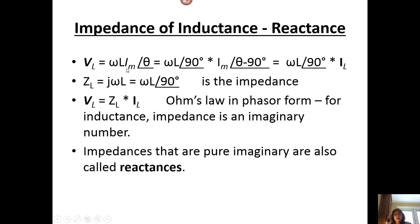We have omega L I sub m with an angle of theta divided by I sub m with an angle of theta minus 90 degrees, and that gives us omega L with an angle of 90 degrees. Impedances that are purely imaginary are also called reactances.